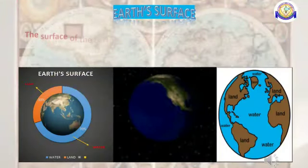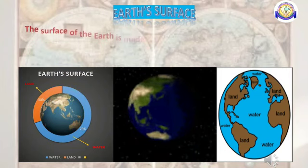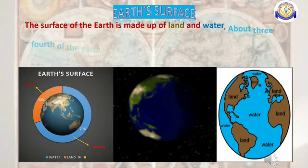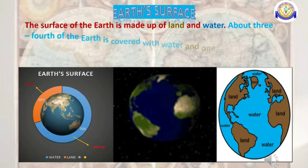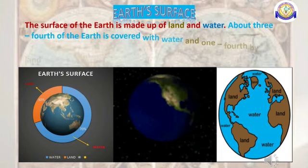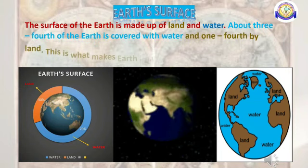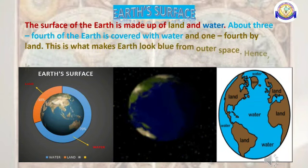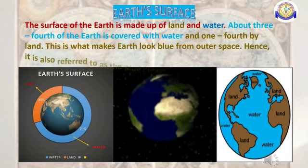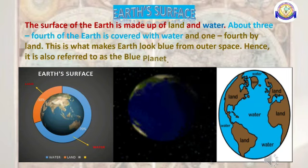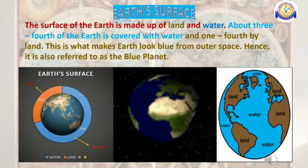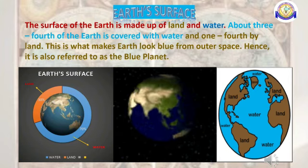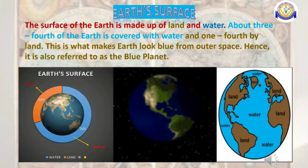Earth's surface: The surface of the Earth is made up of land and water. About three-fourths of the Earth is covered with water and one-fourth by land. When we look from space, Earth looks blue in color because a large part of Earth is covered with water. So Earth is called the blue planet and the watery planet.